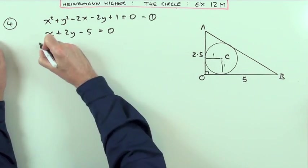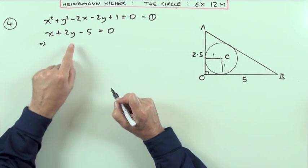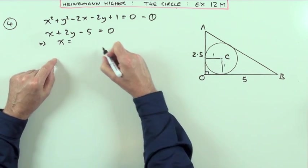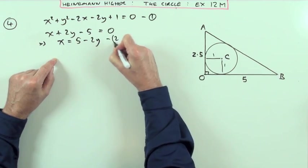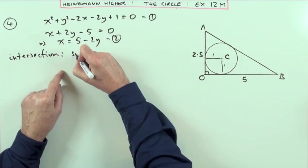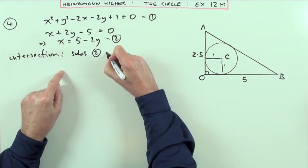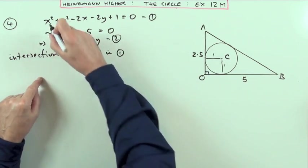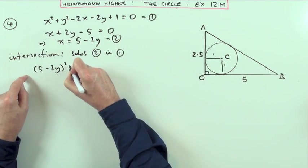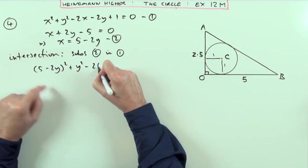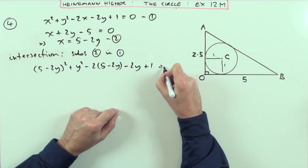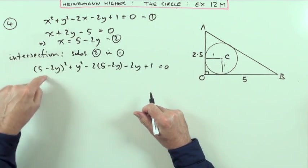I'll call that one. This one I'm going to use in the form of a substitution. I don't want to use y equals because that's going to be a half, so I'll use it in the form x equals, so x would be 5 minus 2y. Look for an intersection, so I'm going to substitute equation 2 in equation 1. Wherever I see x, I write 5 minus 2y.